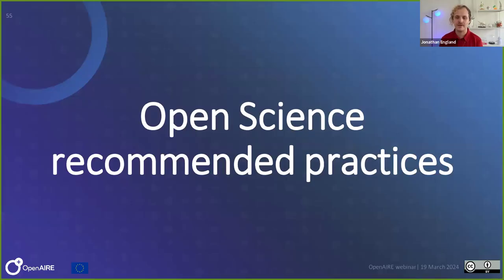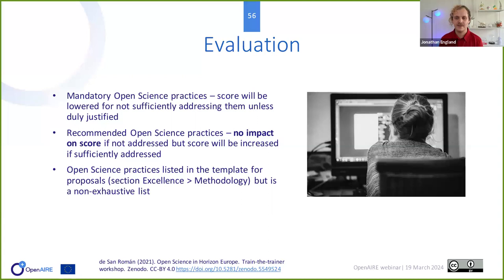Beyond the requirements, there are many other types of open science practices since open science is an umbrella term. Mandatory open science practices are required — your score will be lower if you don't address them. Recommended open science practices will only have a positive impact if you include them — for example, including citizen science is a positive, but not doing it won't have a negative impact.